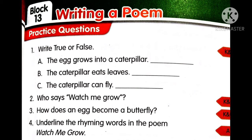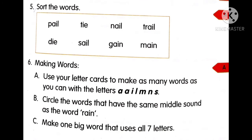Now coming to your fifth question: sort the words. You want to sort the words given. We already discussed the sounds A, I, and I — the vowel team words. Now take the words given in the box and sort them according to the sounds A, I, and I.